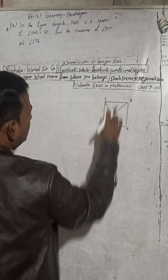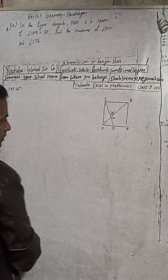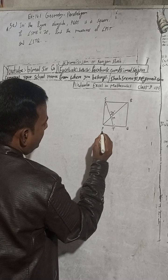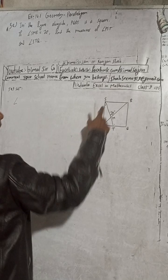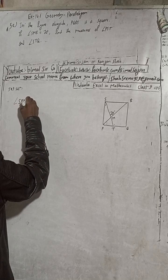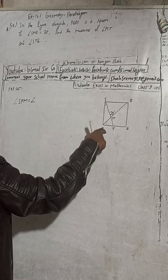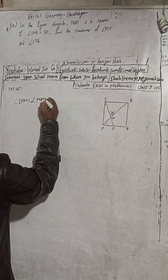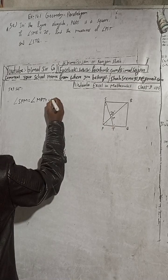To start, we observe that angle SPM is equal to angle NPT. These two angles are equal, and since together they make 90 degrees, each one is 45 degrees. So angle SPM = 45° and angle NPT = 45°.